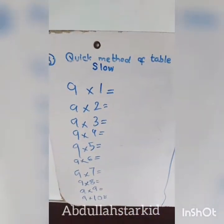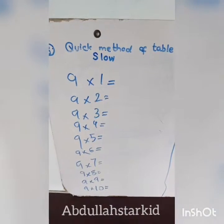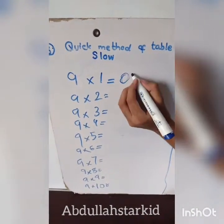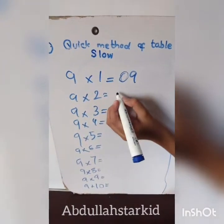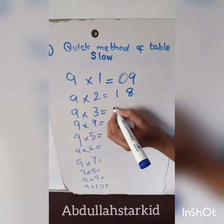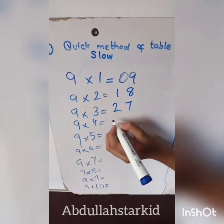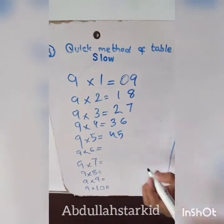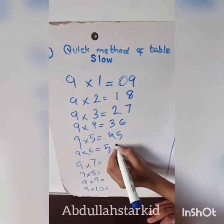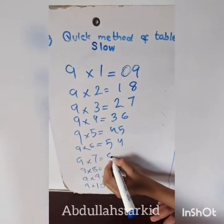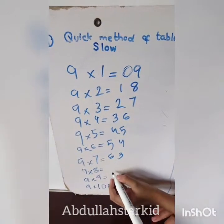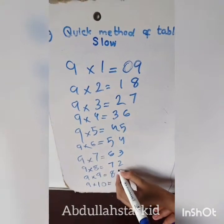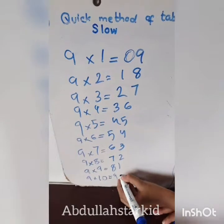Now guys, watch the table of nine — you already know the answers. The answers are: nine, 18, 27, 36, 45, 54, 63, 72, 81, and finally 90.